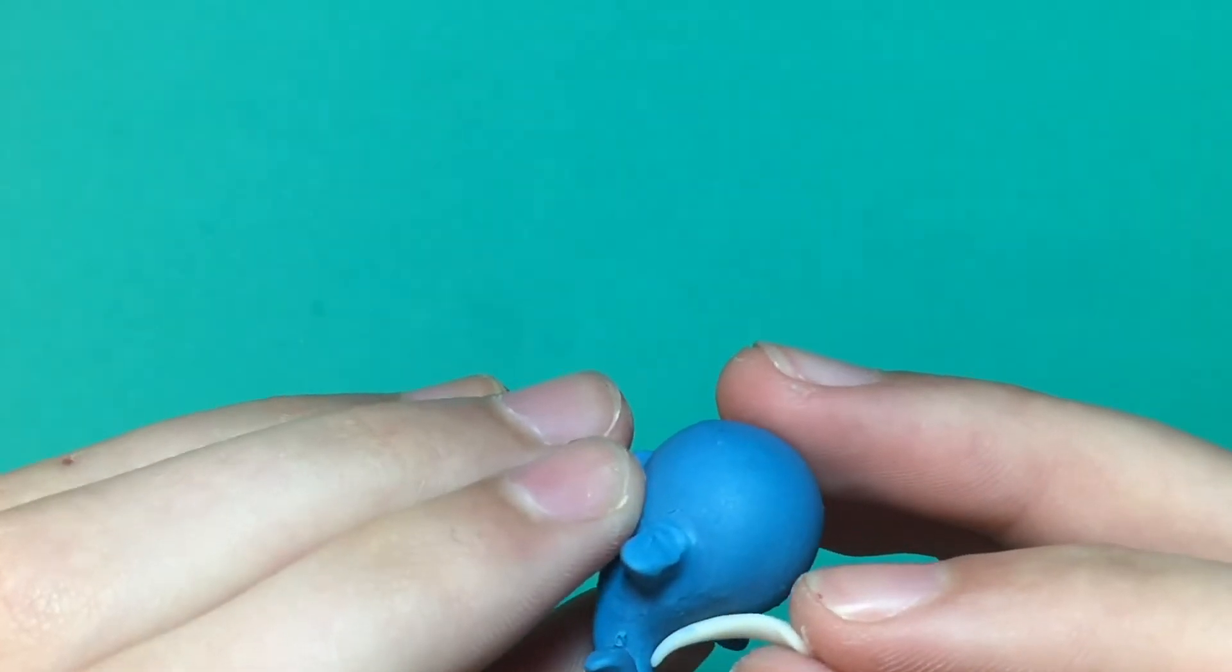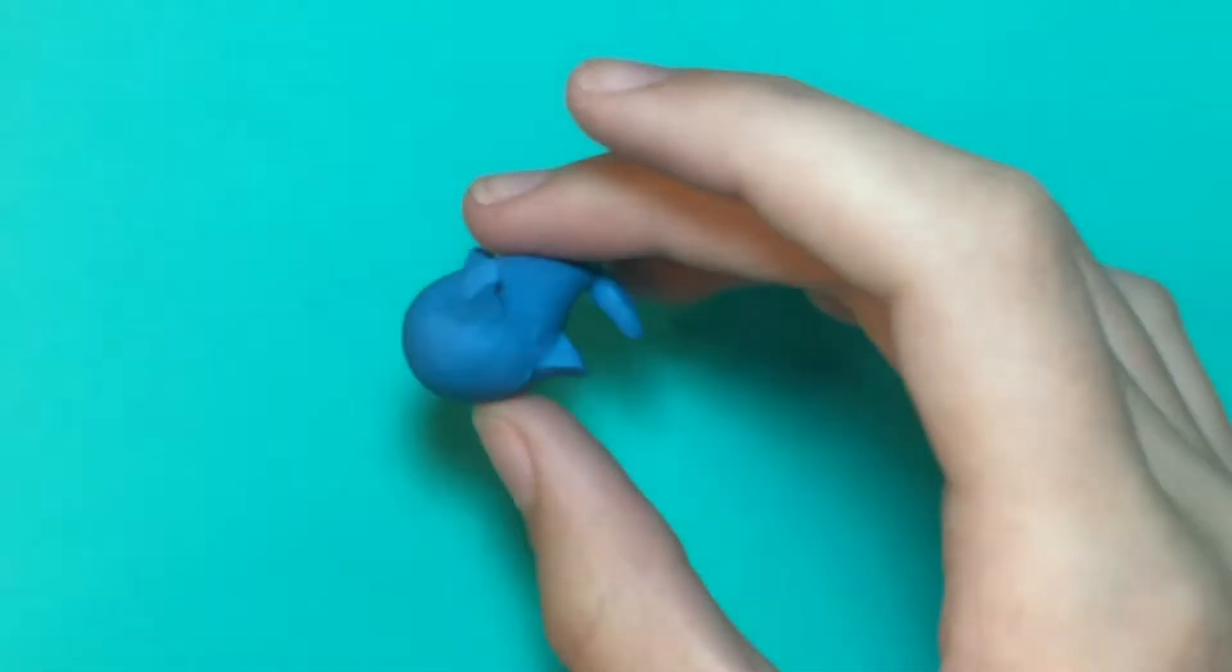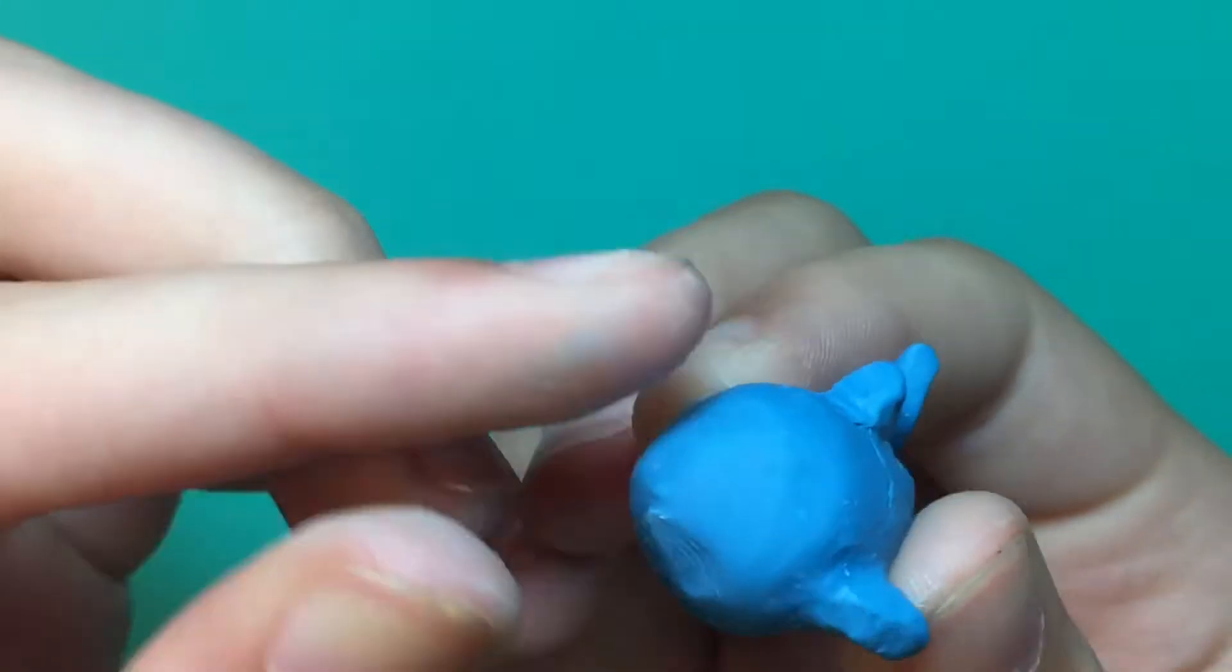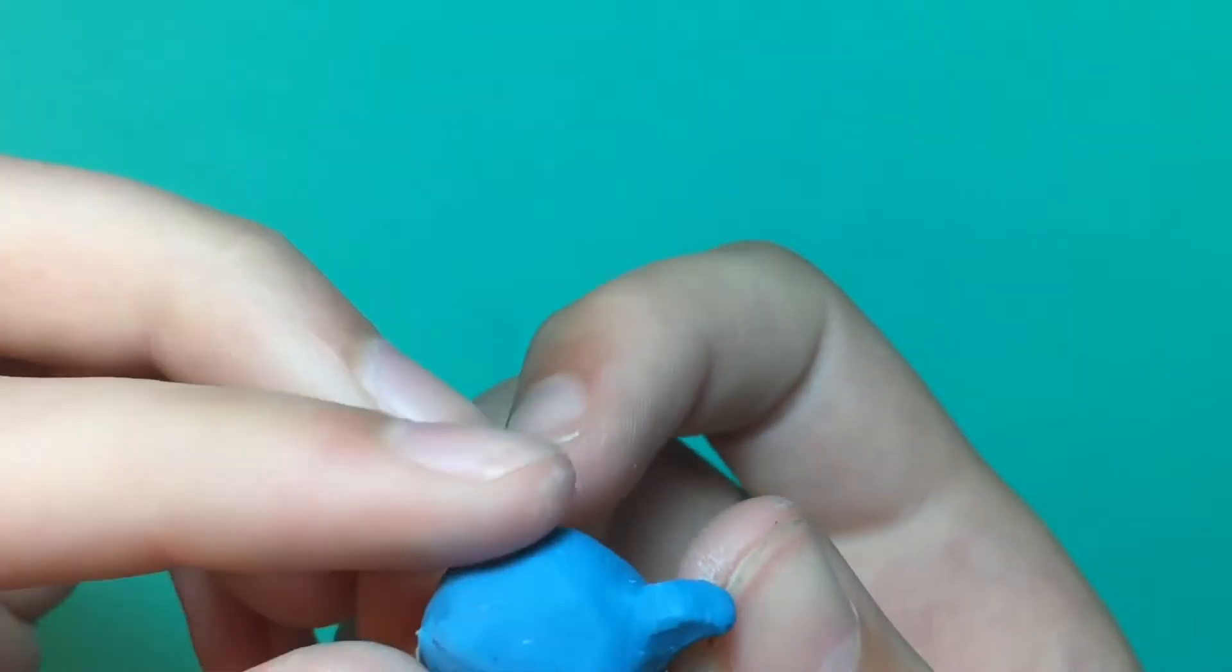Now I'm just pulling at the front of the clay to shape the dolphin's snout. Now I'm indenting holes for the eyes with my dotting tool.